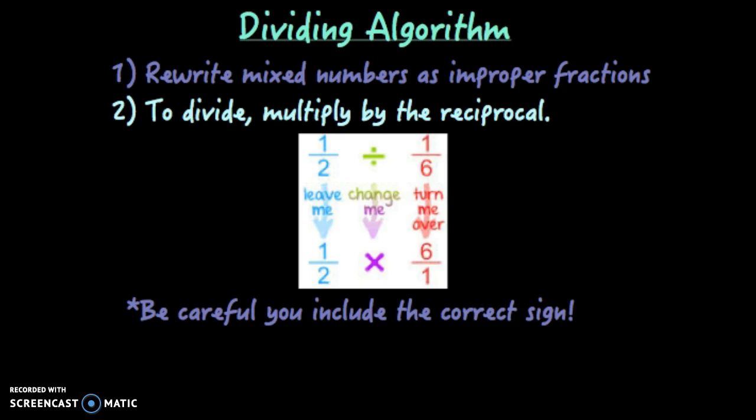So when you're dividing, all you have to do is first rewrite mixed numbers as improper fractions, and then to divide, you just multiply by the reciprocal. That's it.